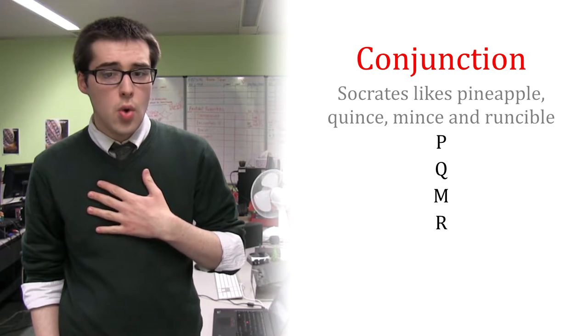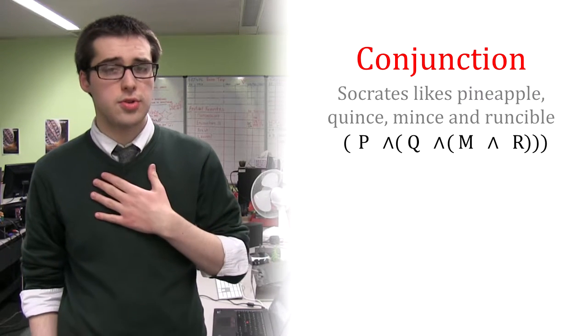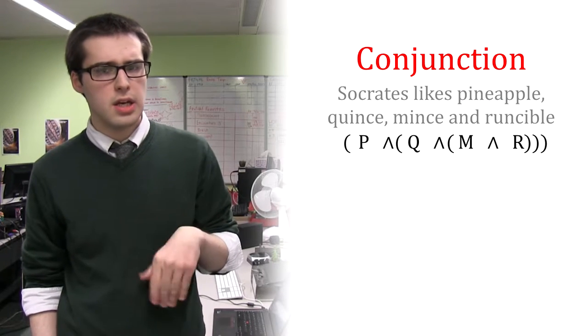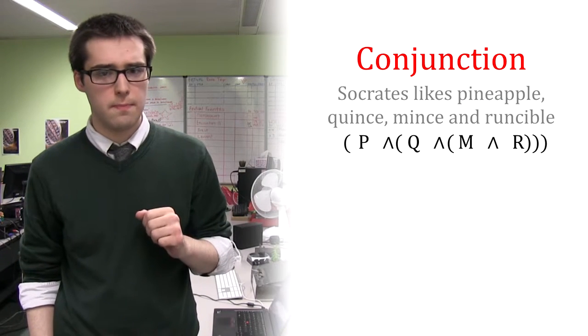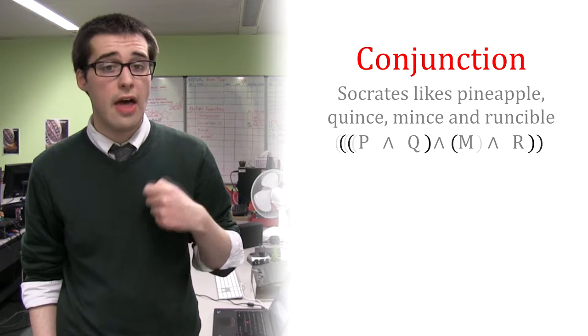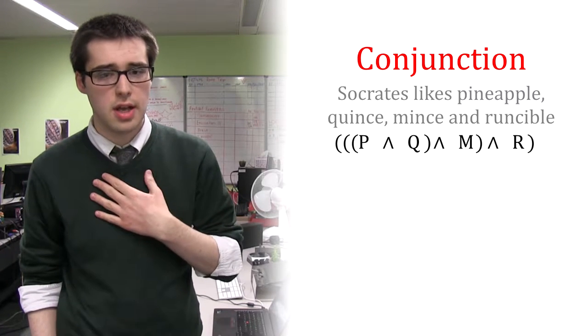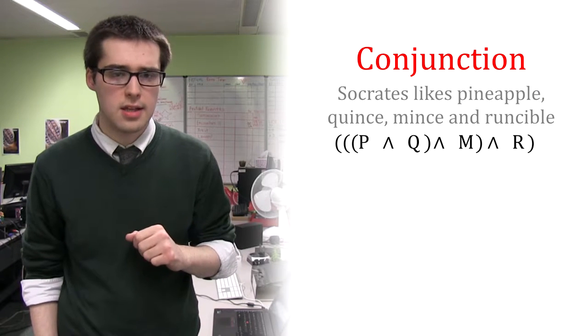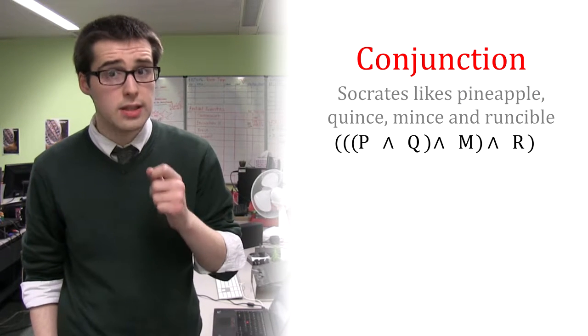Once we have a key, we require multiple conjunctions as well as punctuations. In this particular case, it doesn't actually matter where the brackets go. This, this and this are all correct translations of the natural language statement. However, in most other cases, the placement of the brackets will carry more importance.